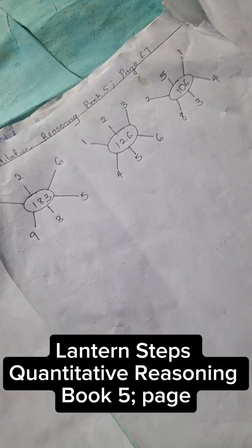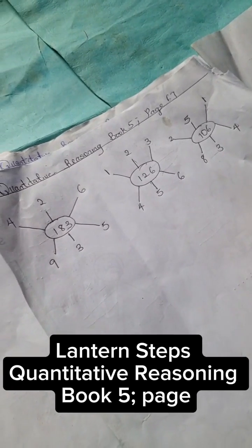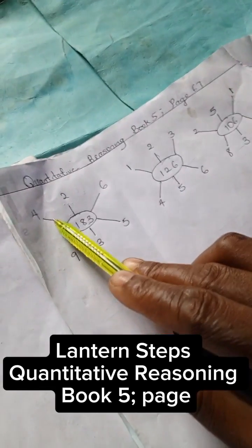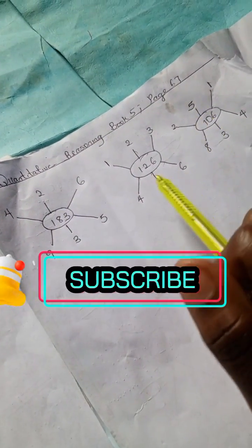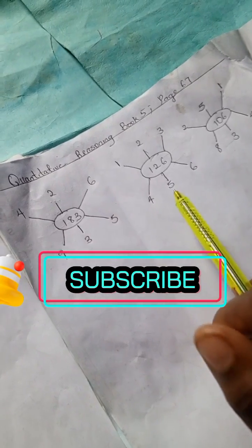Welcome to quantitative reasoning solution section. Today we have quantitative reasoning from Lantern Steps Book 5, page 67. Thank you for joining in today, and to our new viewers, kindly subscribe to this channel for more quantitative reasoning solutions and problems.